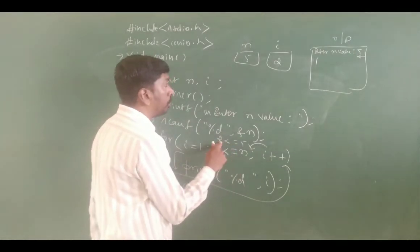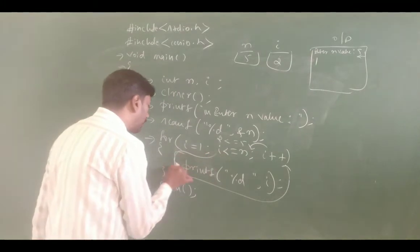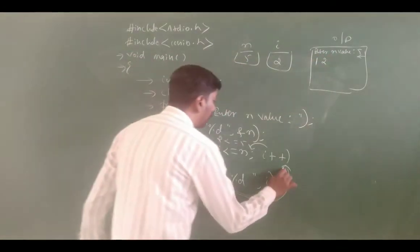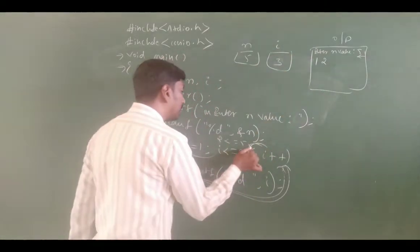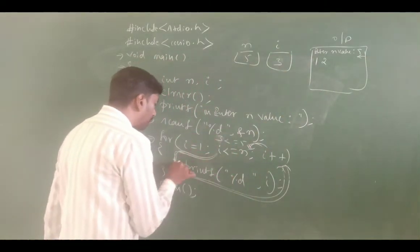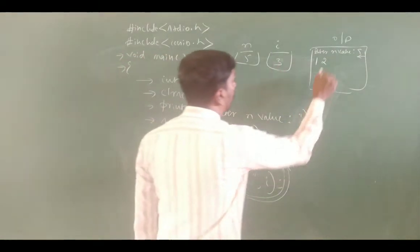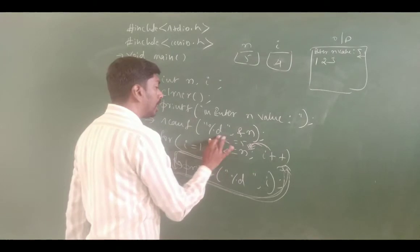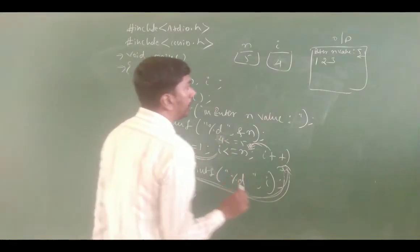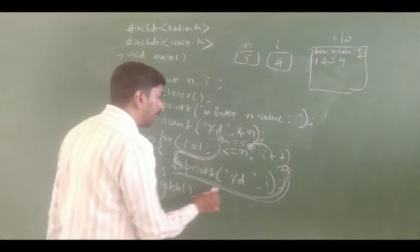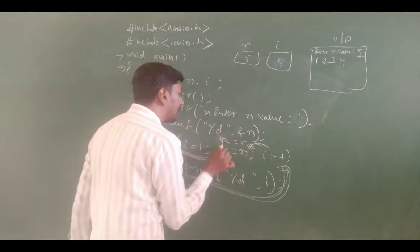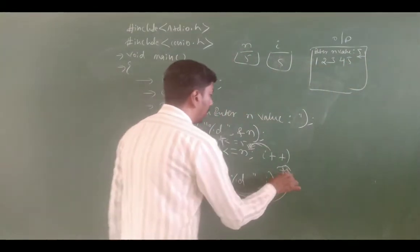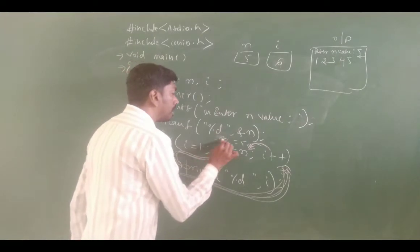i++ makes i equal to 2. 2 is less than or equal to 5 — condition true. It enters the block and prints i value 2. Then i++ again. This continues: 3 is less than or equal to 5 — condition true, prints 3. Then 4 is less than or equal to 5 — condition true, prints 4. Then 5 is less than or equal to 5 — condition true, prints 5. Then i++ makes i equal to 6. 6 is less than or equal to 5 — condition false.